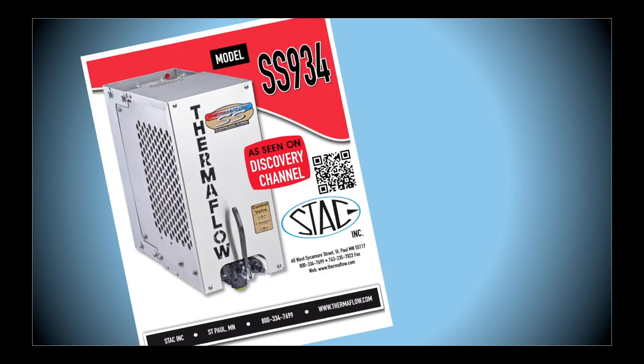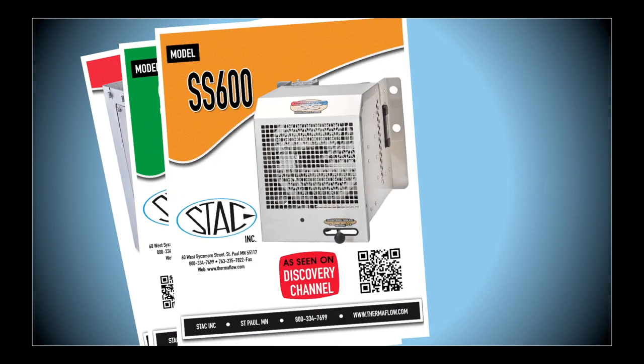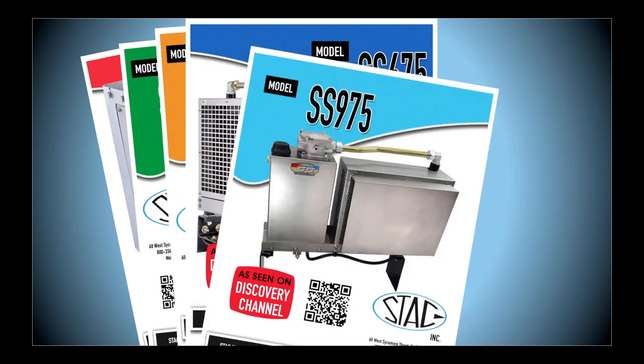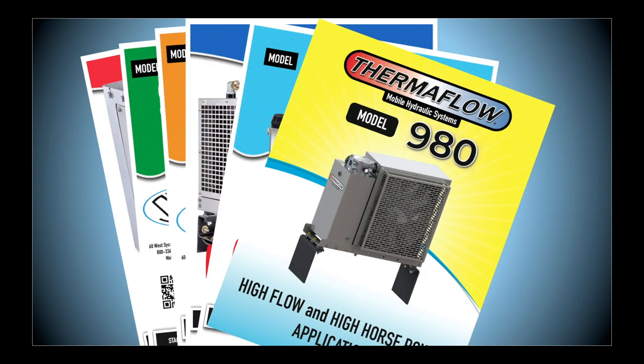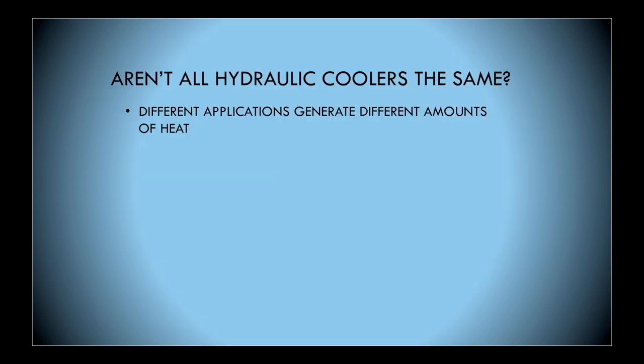So how do I know what Thermaflow I need? There are many Thermaflow models available such as the 934, 500P, the 600, the 675, the 975, and the 980. But the question you may ask yourself is aren't all hydraulic coolers the same? Can't I just grab one off the shelf? Well the problem is different applications generate different amounts of heat.